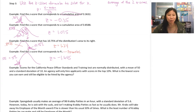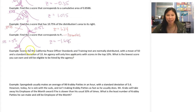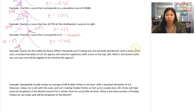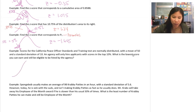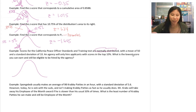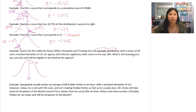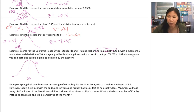Now we're ready to solve for x. Scores for the California Peace Officer Standards and Training test are normally distributed with a mean of 50 and a standard deviation of 10. An agency will only hire applicants with scores in the top 10%. What is the lowest score you can earn and still be eligible to be hired? I'll draw out the normal curve first, label the mean of 50 and standard deviation of 10. Top 10% means shading to the right with 10% to the right — we're solving for x, the cutoff score.